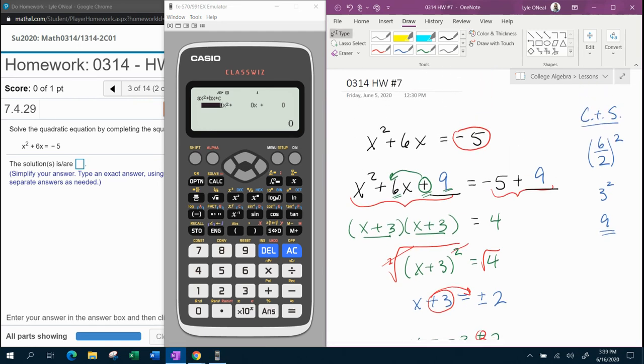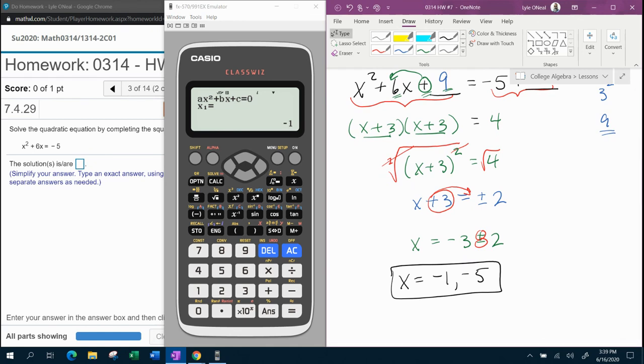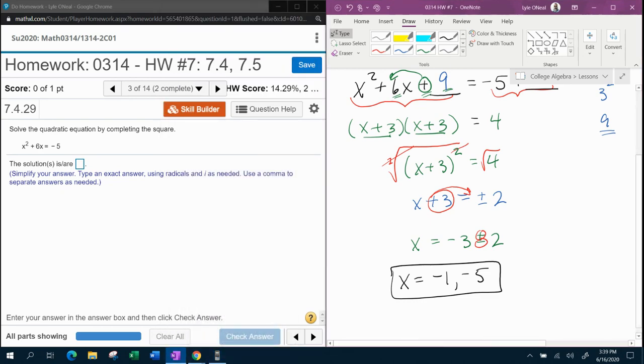And then the values for A, B, and C, we're actually going to have to go back to the beginning and move the negative 5 over so that we can set it equal to 0. So we would have x squared plus 6x plus 5 equal to 0. And then we can see A is 1, B is 6, and C is 5. Let's input those values. 1, 6, and 5. And we can see one of the solutions is negative 1, which we got. And the other solution is negative 5. So the calculator verifies our handwritten work.